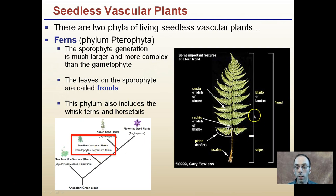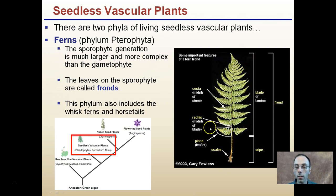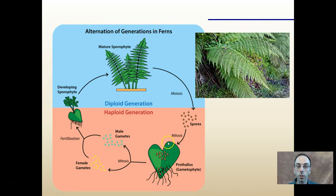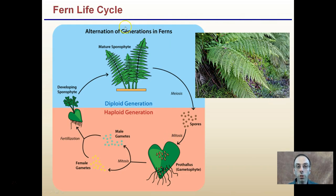The blade is the area here that we see as the frond — the frond being the entire portion, and the blade being where we would typically say the leaves are. But each one of these are little leaflets, so this is kind of all one continuous unit, and that is referred to again as the frond for ferns.